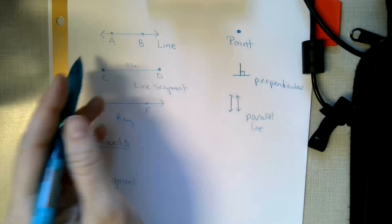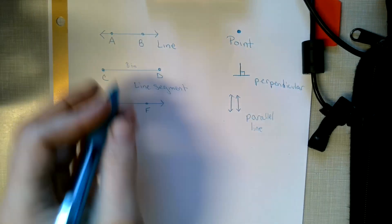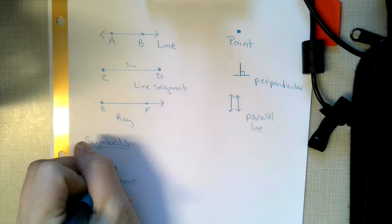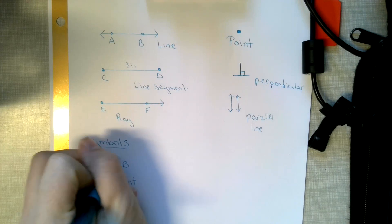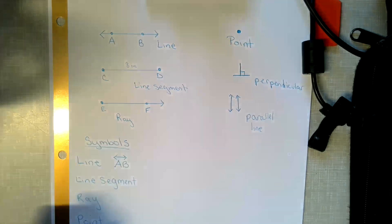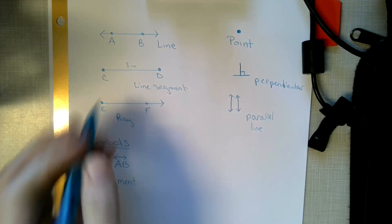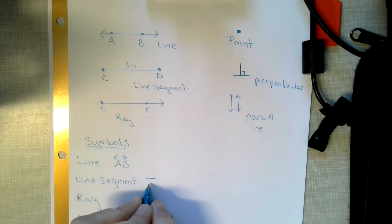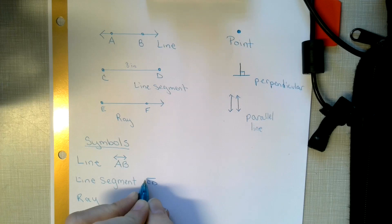So there's a symbol that goes with the line. So if I were to name this, I would put AB and above it, I have to put a little tiny arrows on each side. Now a line segment, I just put a line like that and I put CD. I don't have arrow tips on it because it's a line segment.